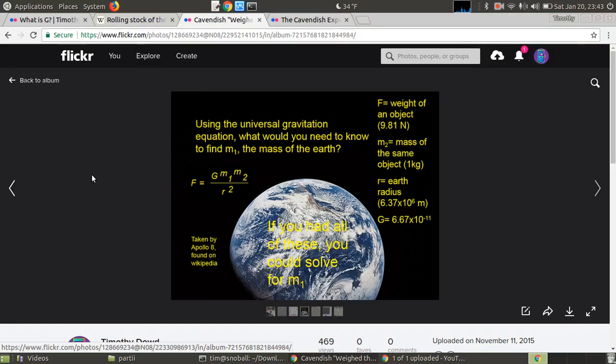When Cavendish finished his experiment, people were excited and said that he had weighed the Earth. So what does that mean? Well, he found the last piece of the universal gravitation equation, big G, that we needed to use to figure out how much mass the Earth actually has. Let's talk about how to do that.